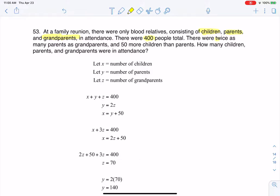There were twice as many parents as grandparents, and there were 50 more children than parents. That was a lot of kids.